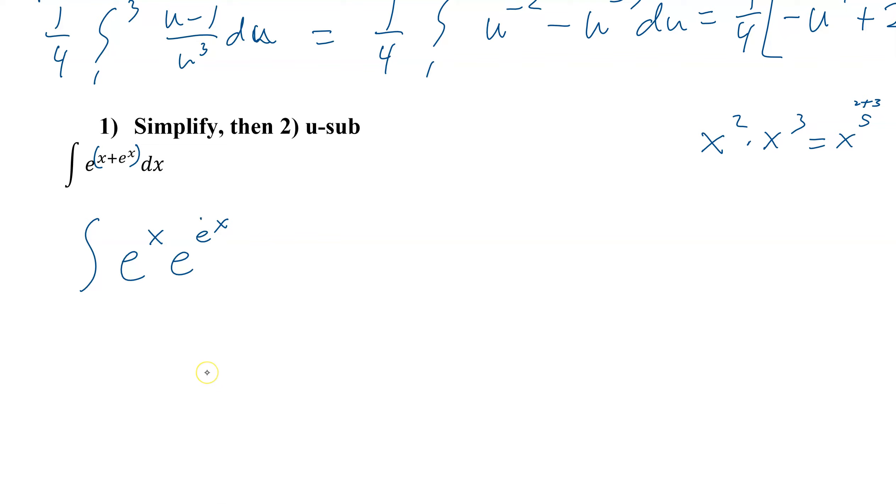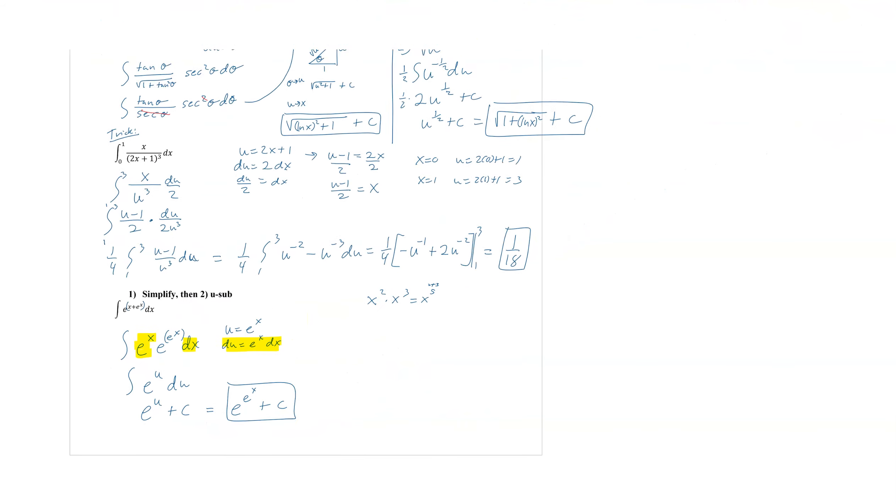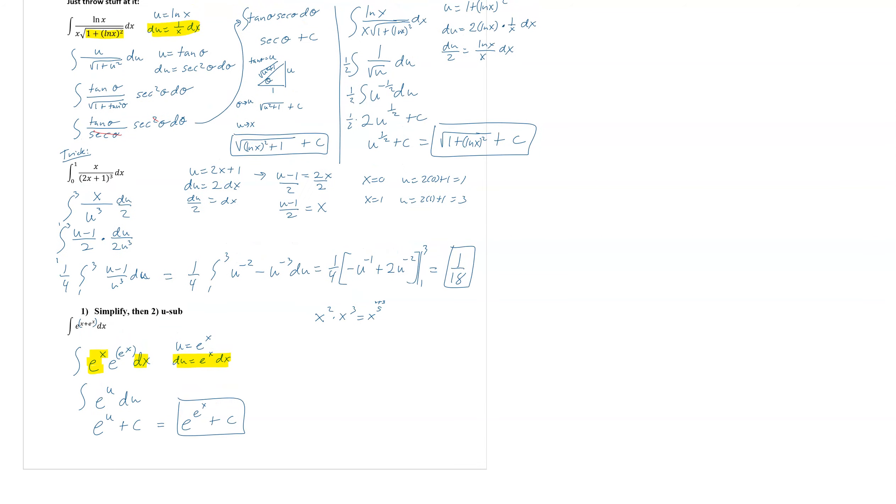And so your first bet is always to go for the things that are on the inside, our exponent. So u equals e to the x. So du equals e to the x dx. And you can see there it is. There's my e to the x dx, which is my du. So I would end up with e to the u du. And that's exactly what we're looking for. So we get e to the u plus c. Plugging it back in now, we get e to the e to the x plus c. So this is a u-substitution, three different ways of doing it. We've actually got two more videos of different ones as well.